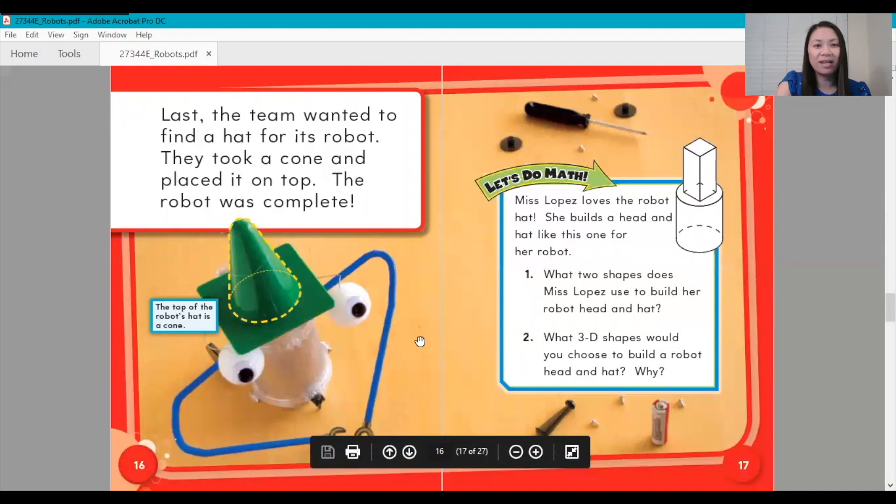Last, the team wanted to find a hat for its robot. They took a cone and placed it on top. The robot was complete. The top of the robot's hat is a cone.